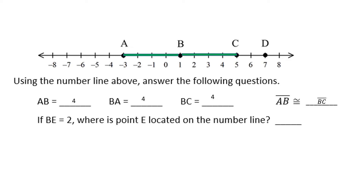Now, if BE equals 2, where is point E located on the number line? Starting at B and going two units in one direction — one, two — that lands at 3. But going the other direction — one, two — that lands at negative 1. So E is either located at 3 or at negative 1.